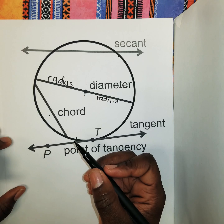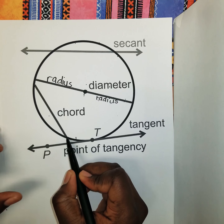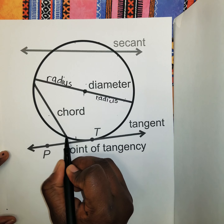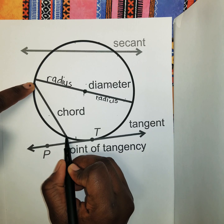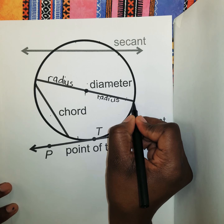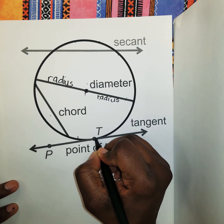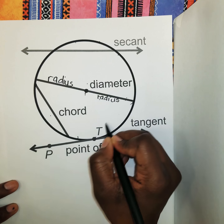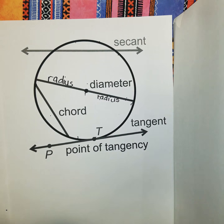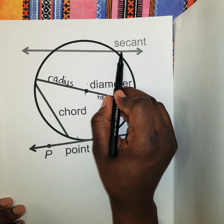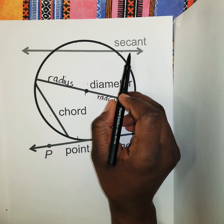Now let's move on to chord. A chord is a line segment whose endpoints are on the circle. The endpoints of the chord lie on the circumference, and I could draw a chord from one point on the circumference to another point on the circumference — those endpoints being on the circle is what defines it as a chord.